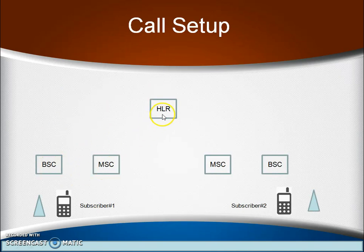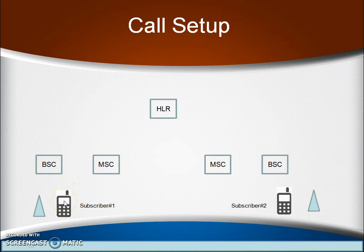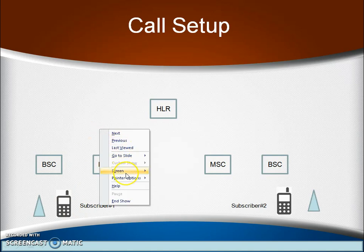We already know BSC, MSC, HLR — these are the functional units. Subscriber one wants to call subscriber two — remember, subscriber one is Johnny and subscriber two is Janardhan, and they are from the same country. For simplicity, we rename the MSC serving subscriber one as MSC1 and the MSC for subscriber two as MSC2. When subscriber one dials the MSISDN number of subscriber two, this MSISDN number is sent using signaling information to MSC1.